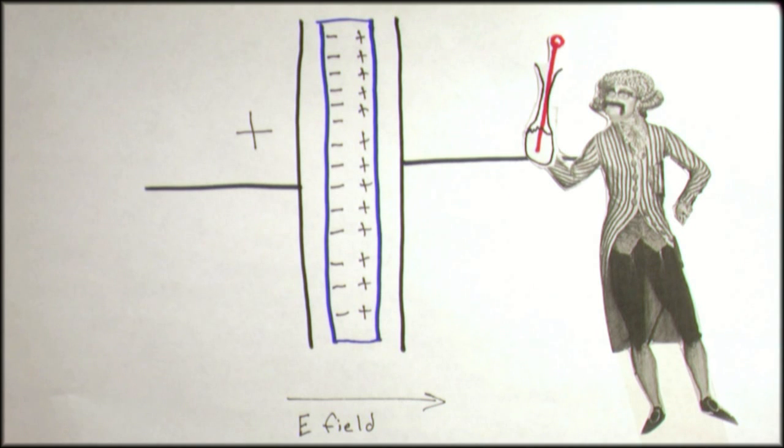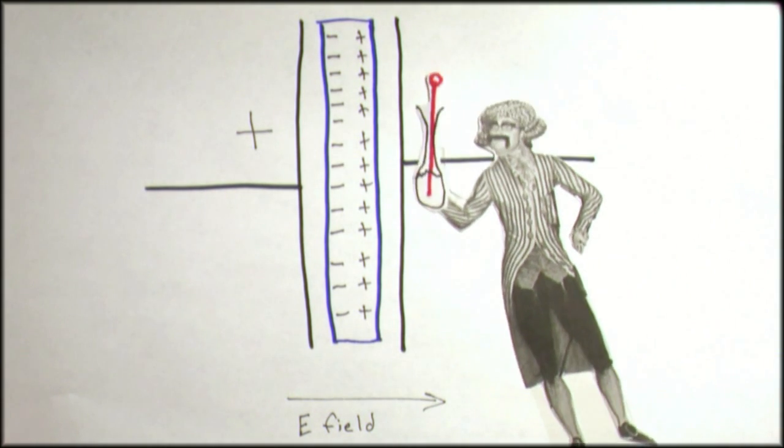A capacitor's ability to store a charge is measured in farads. A one-farad capacitor will accept one amp and change one volt over one second. The surface area of the metal plates, distance between the metal plates, and the dielectric material are the major factors that determine the farad rating.